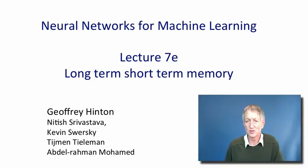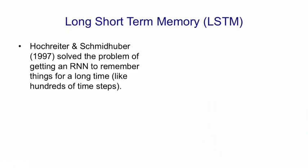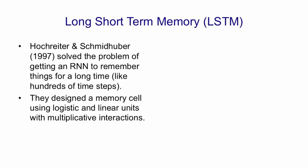Long short-term memory has been very successful for tasks like recognising handwriting, where it's won a number of competitions. In 1997, Hochreiter and Schmidthuber published a paper in Neural Computation that solved the problem of getting a recurrent neural network to remember things for a long time. Their recurrent nets could remember things for hundreds of time steps. They did this by designing a memory cell that used logistic and linear units with multiplicative interactions.